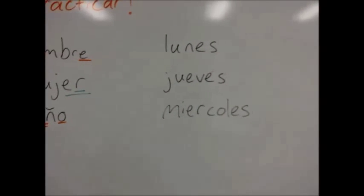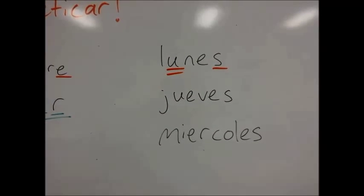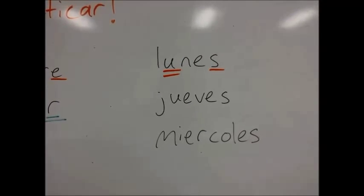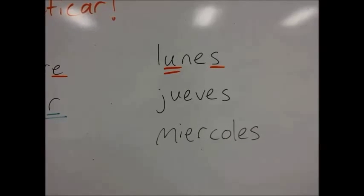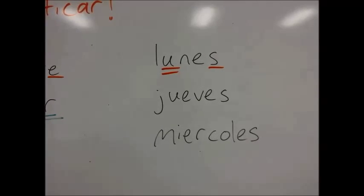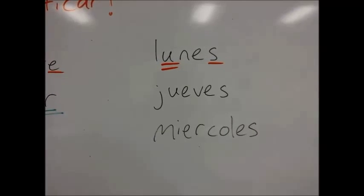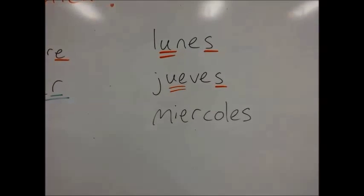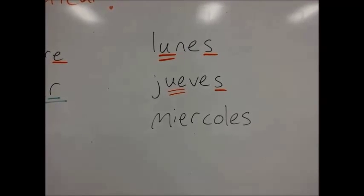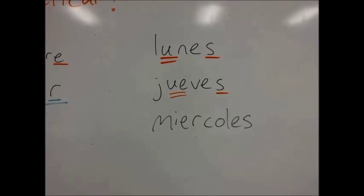Now the next set of words. Lunes ends in a consonant, but that consonant is S, which means lunes is a llana word with emphasis on the second to last syllable. Since the emphasis really is on the second to last syllable, we don't need an accent. Now let's try jueves. Jueves is just like lunes — it ends in S, one of the two consonants in the llana category, so the emphasis is on the second to last syllable, jue.